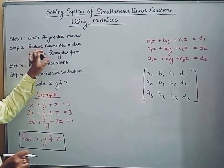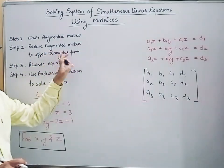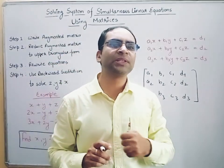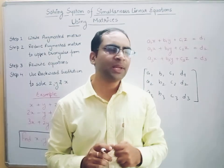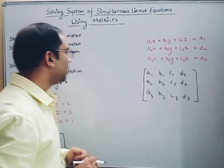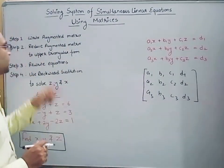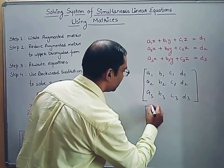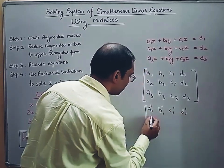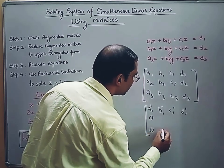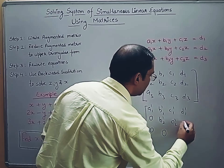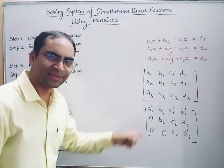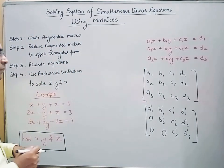In step 2, we reduce this augmented matrix into upper triangular form. If you are not aware of what upper triangular form is, you can watch my specific video on that from the channel playlist. In the upper triangular form, we convert the matrix so that all elements below the leading diagonal become 0. This form is the upper triangular matrix. It is very easy to convert — we will solve it together.